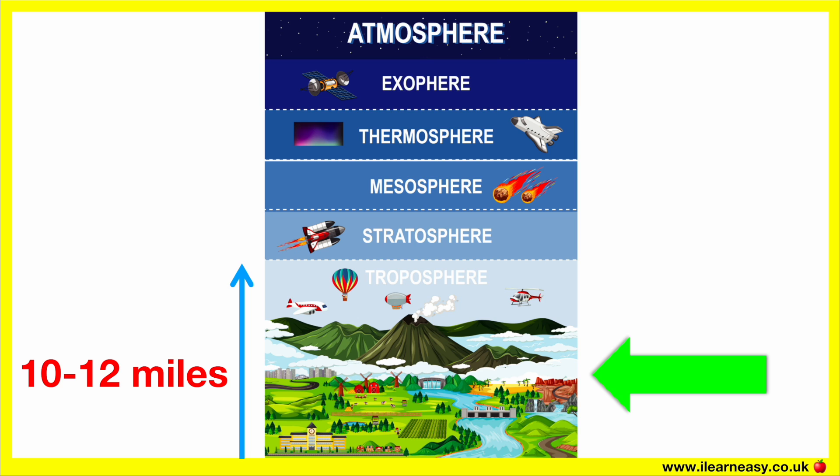To summarise: the troposphere is the lowest layer. Most of the Earth's weather happens in this layer. The temperature decreases with increase in altitude, and it's the densest layer.